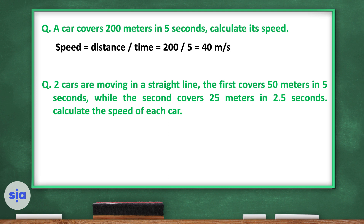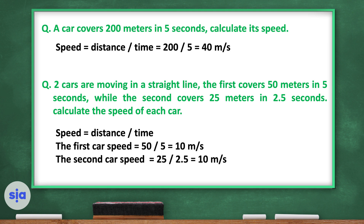Another example: two cars moving in a straight line. The first covers 50 meters in 5 seconds; the second covers 25 meters in 2.5 seconds. Using speed equals distance divided by time, the first car: 50 divided by 5 equals 10 meters per second. The second car: 25 divided by 2.5 also equals 10 meters per second. Both cars are moving with the same speed.